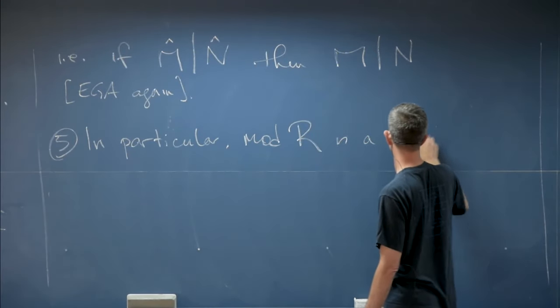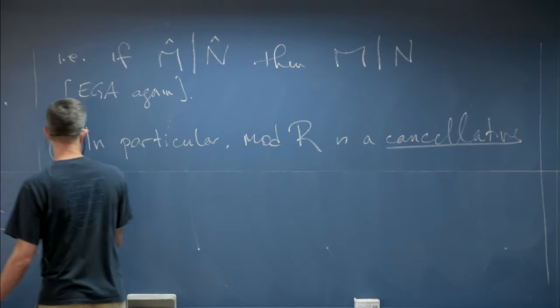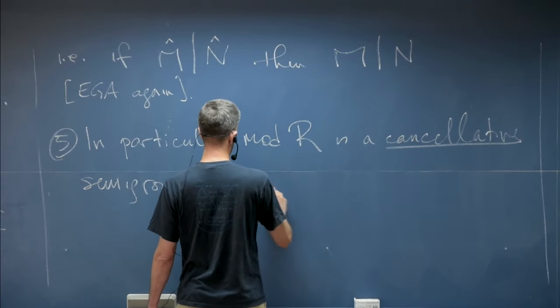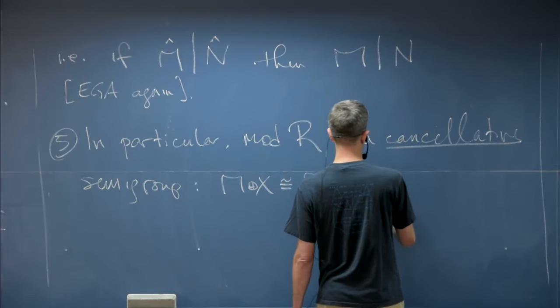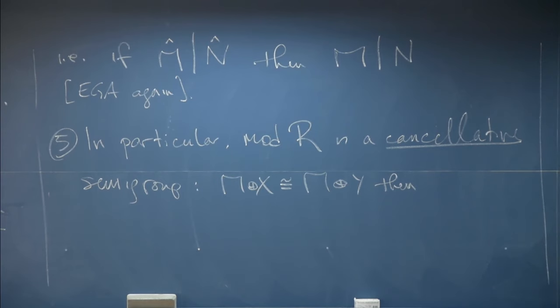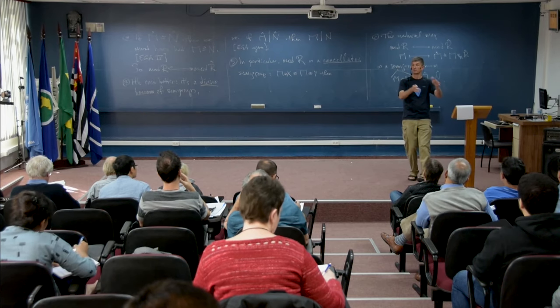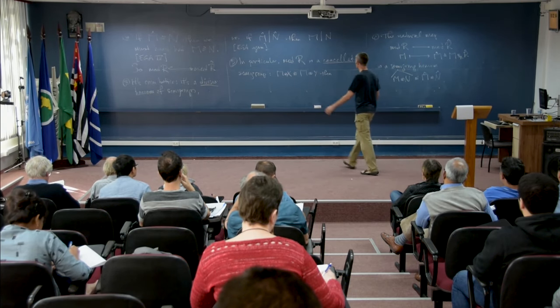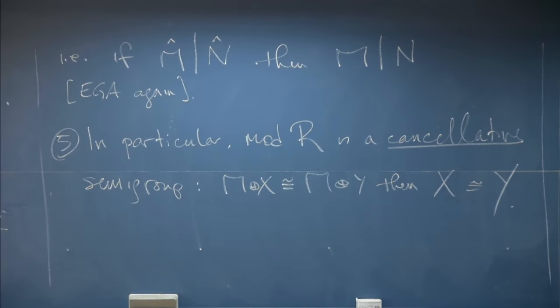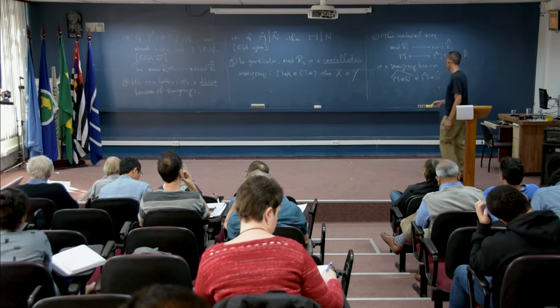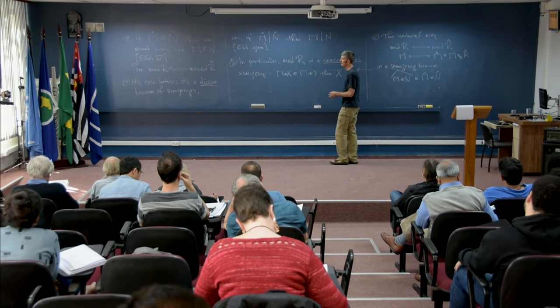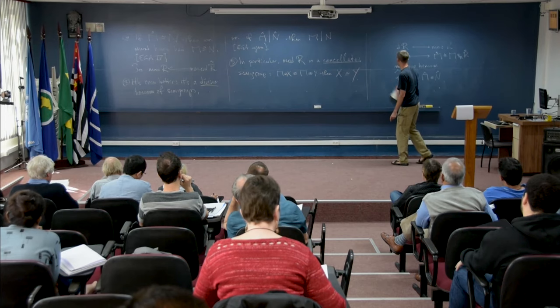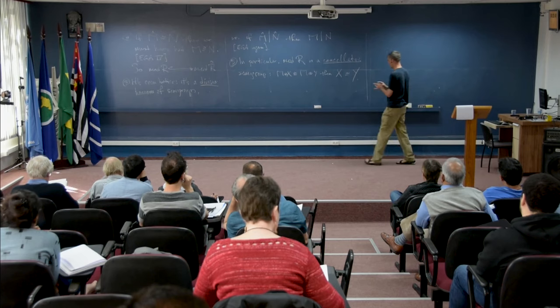And finally as a last preliminary fact, in particular mod R is what's called a cancelative semi-group. So if M direct sum X is isomorphic to M direct sum Y, then, insert here a short proof which I won't write down: pass to the completion, use the fact that you can cancel over the completion with the Krull-Schmidt property, and then descend back down, then X was isomorphic to Y.